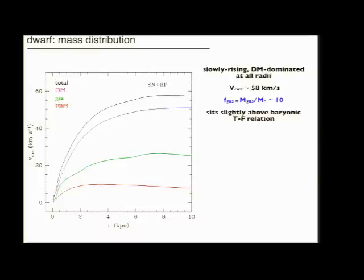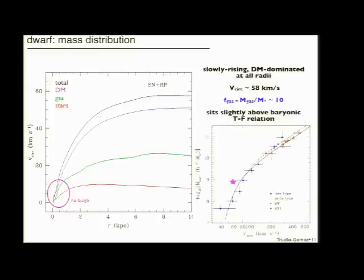The fraction of gas, which is the total mass in gas over the total mass in stars is about 10, which is consistent with observations of these kinds of dwarfs. Circular velocity is about 58 kilometers per second, although there's no bulge. So it's disk dominated, although it sits slightly high on the baryonic Tully-Fisher relation, so it still has about a factor of two too many stars.